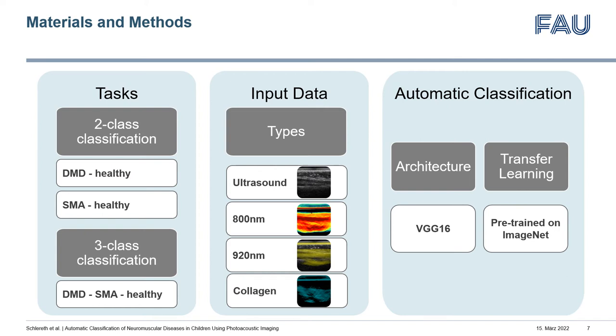We fine-tuned a VGG16 architecture pre-trained on the ImageNet dataset for each classification task. We also considered other architectures such as AlexNet, ResNet, and EfficientNet B0 in preliminary studies. However, they performed on par or slightly lower than VGG16.